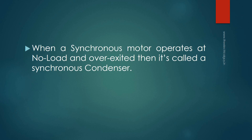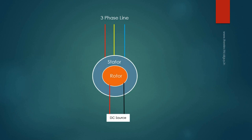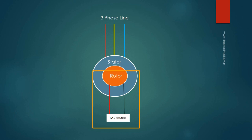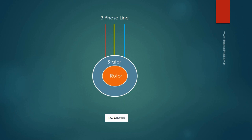The MMF needed to produce the constant flux phi may be produced by either the stator — connected to a three-phase line — or by the rotor — excited by a DC source — or by both. If the rotor excitation current is zero, all the flux has to be produced by the stator alone, and hence the stator must absorb reactive power from the three-phase line.